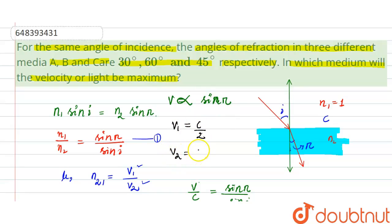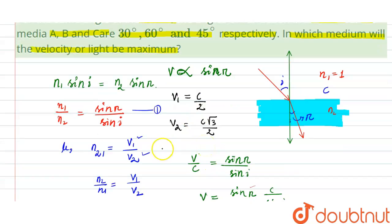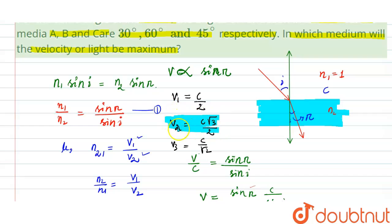For medium B with refraction angle 60 degrees: v2 = c × sin 60° = c × (√3/2). For medium C with refraction angle 45 degrees: v3 = c × sin 45° = c/√2. Comparing all three values, √3/2 is the maximum, so the velocity of light is maximum in medium B.